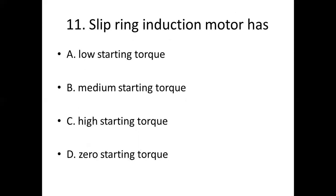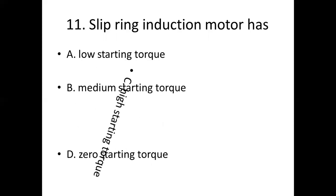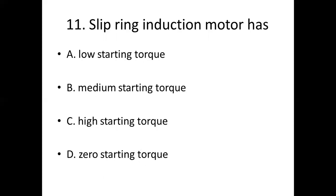Eleventh bit. Slip ring induction motor has. Option A: Low starting torque. Option B: Medium starting torque. Option C: High starting torque. Option D: Zero starting torque. Answer: Option C. High starting torque.